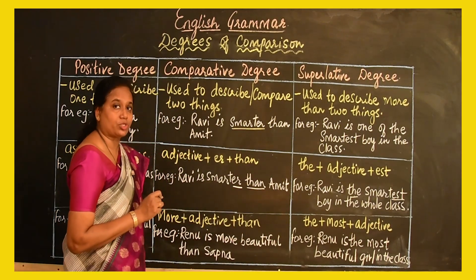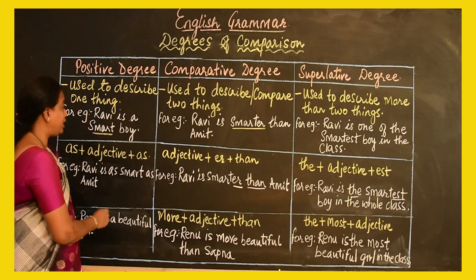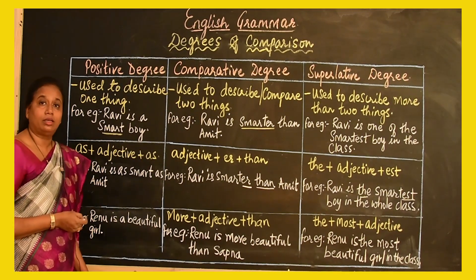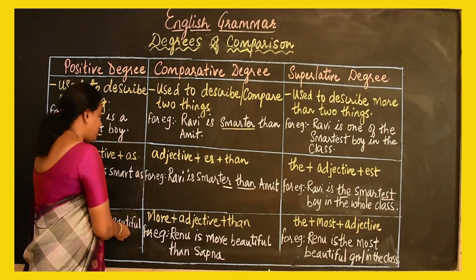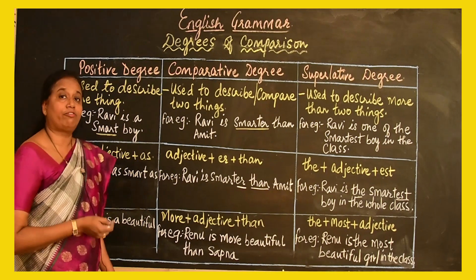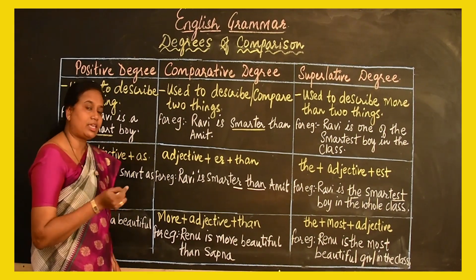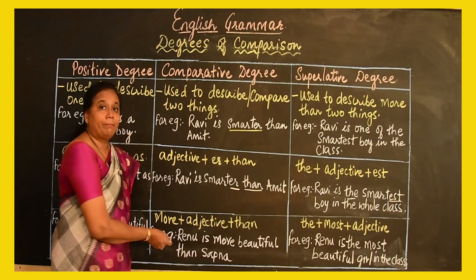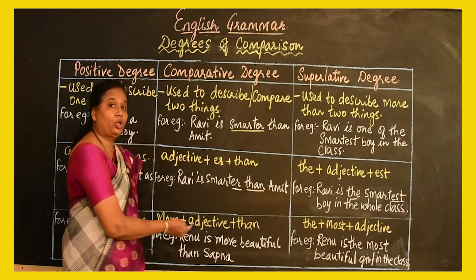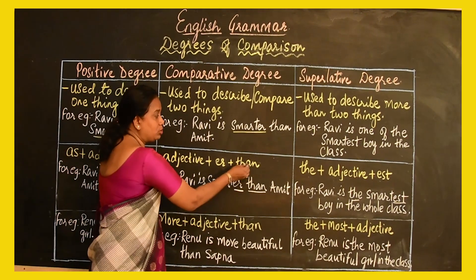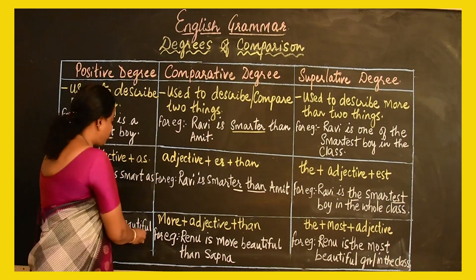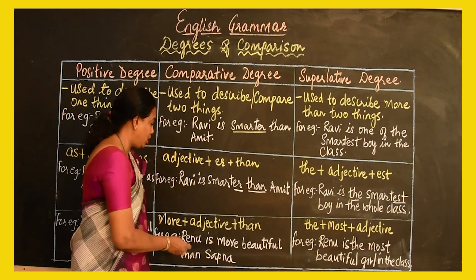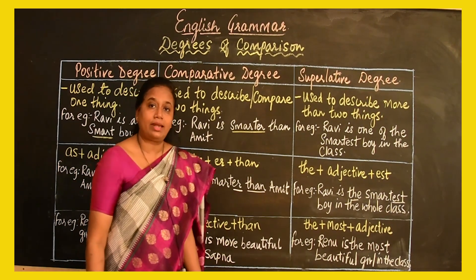For irregular adjectives, there is no change in the positive degree — it remains the same. For example, 'Renu is a beautiful girl.' If we are comparing Renu with another girl, we can say 'Renu is as beautiful as Smita.' In the comparative degree, we add 'more' before the adjective, plus the word 'than,' because 'beautiful' cannot become 'beautifuler.' So we say 'Renu is more beautiful than Sapna.'